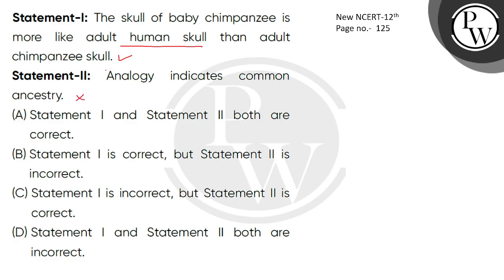Statement 2: The analogy indicates common ancestry. This analogy doesn't tell common ancestry — human and chimps' DNA is so similar because the two species are so closely related. This analogy doesn't indicate common ancestry. This is incorrect.